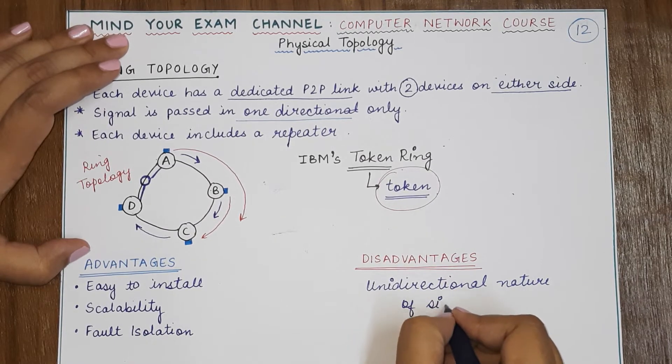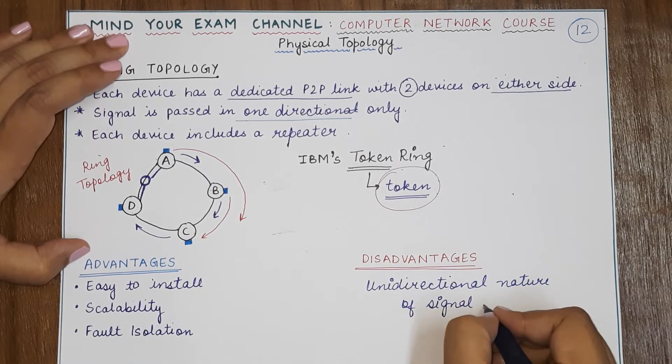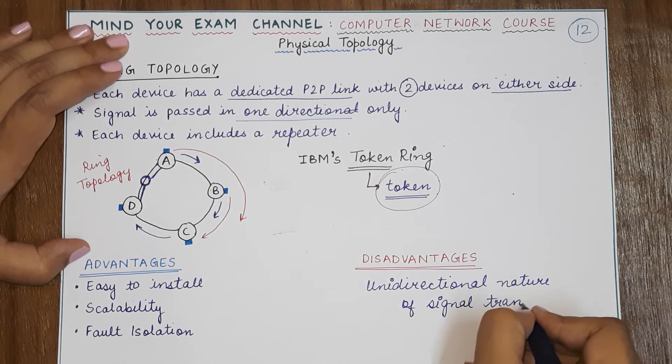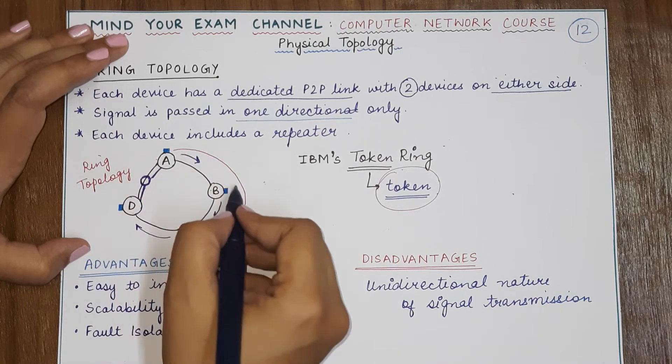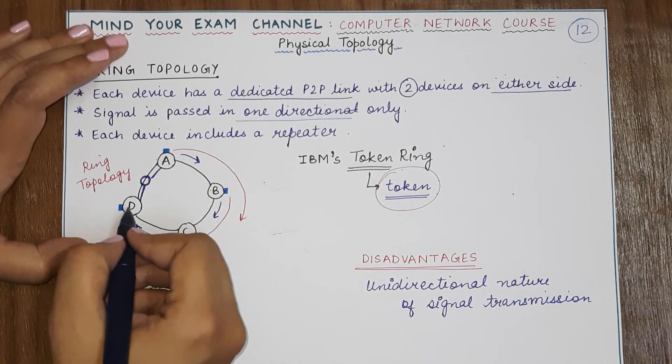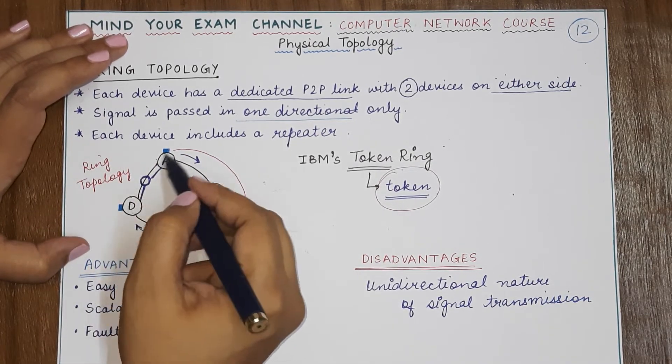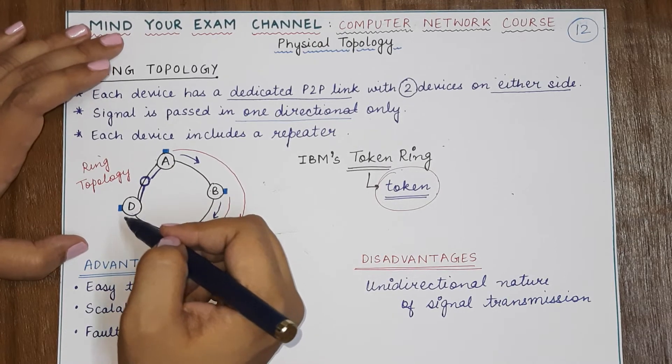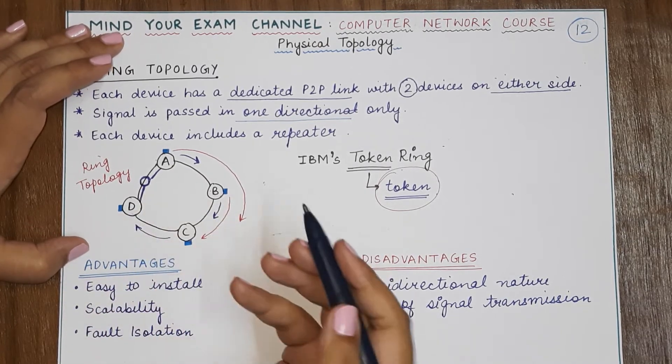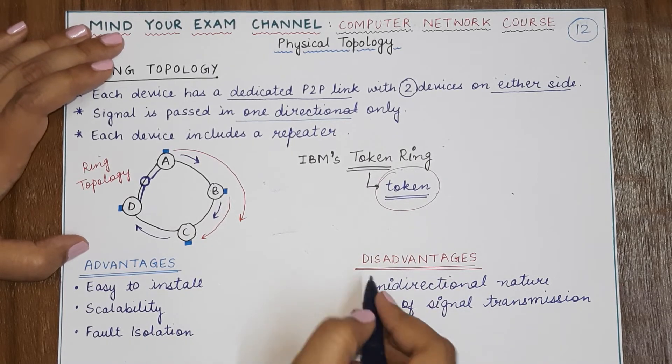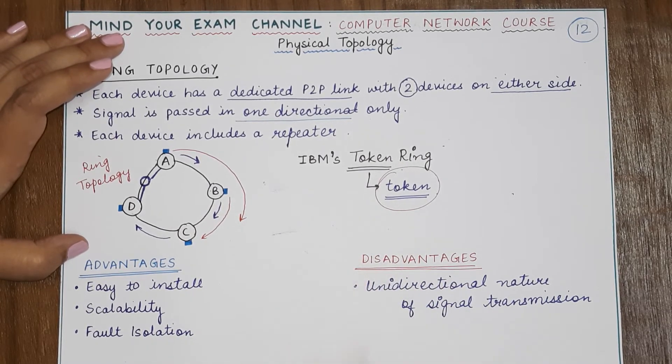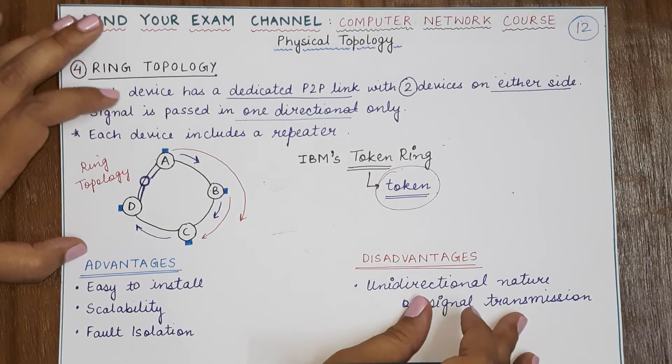See, as I have explained with the example, if A has to send data to D, it has to take the entire route from A to B, B to C, C to D, even if there was a direct connection from A to D. Okay, so this actually creates problems. It might lead to a lot of time being consumed, and that is why it is one of the biggest disadvantages of the ring topology.